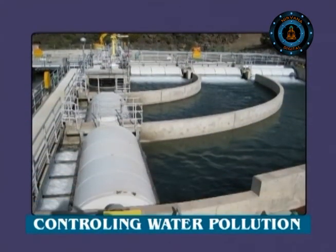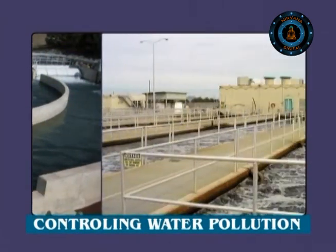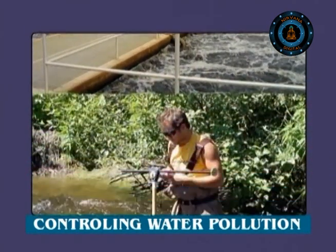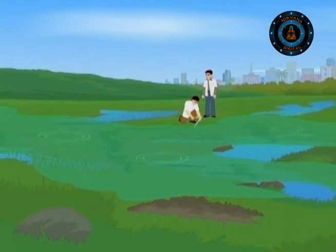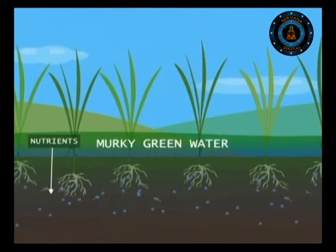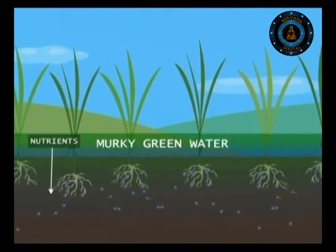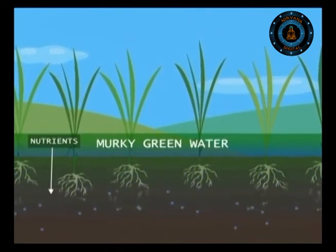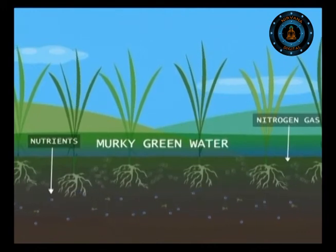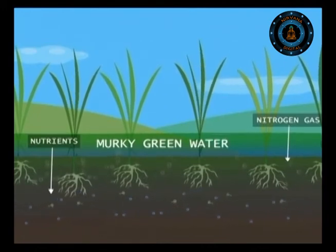Various steps are being taken to control the problem of pollution. One natural method is to let the water pass through a marshy wetland first. The growing wetland plants take up some of the nutrients and bacteria, and turn some of the nitrates into harmless nitrogen gas.